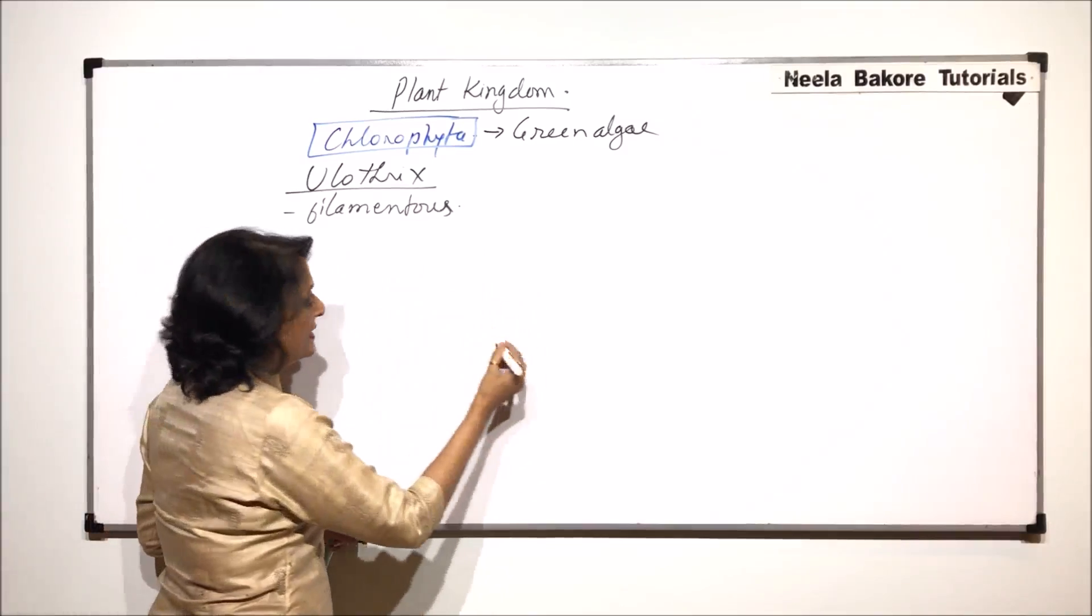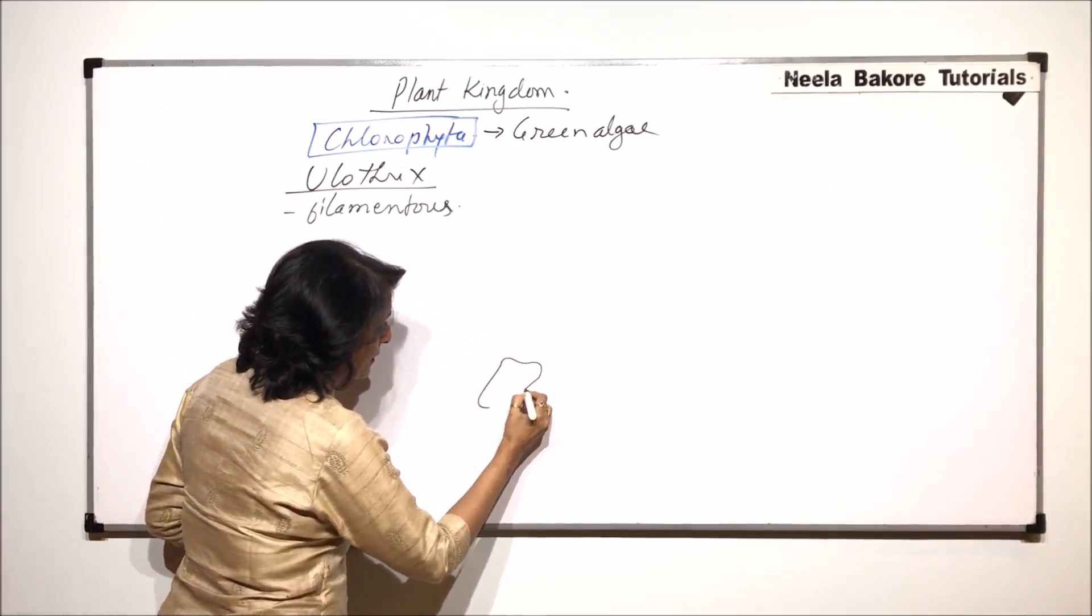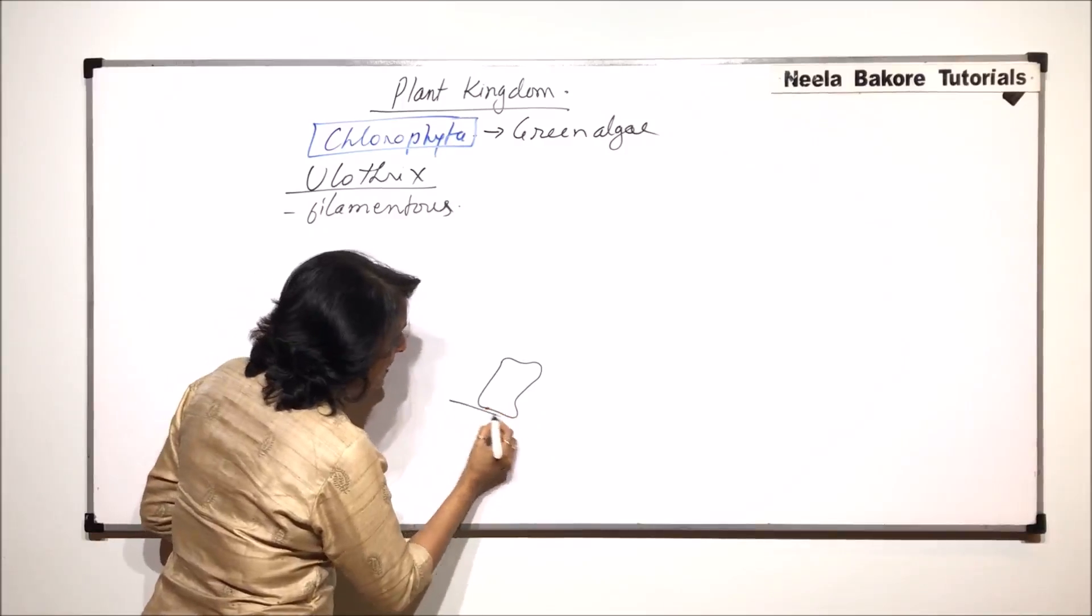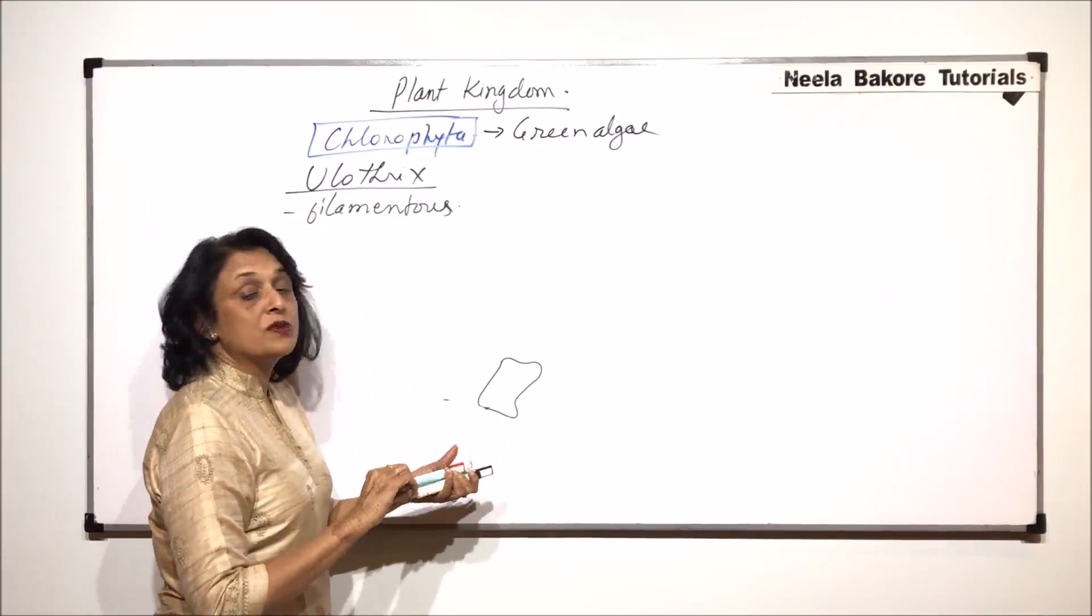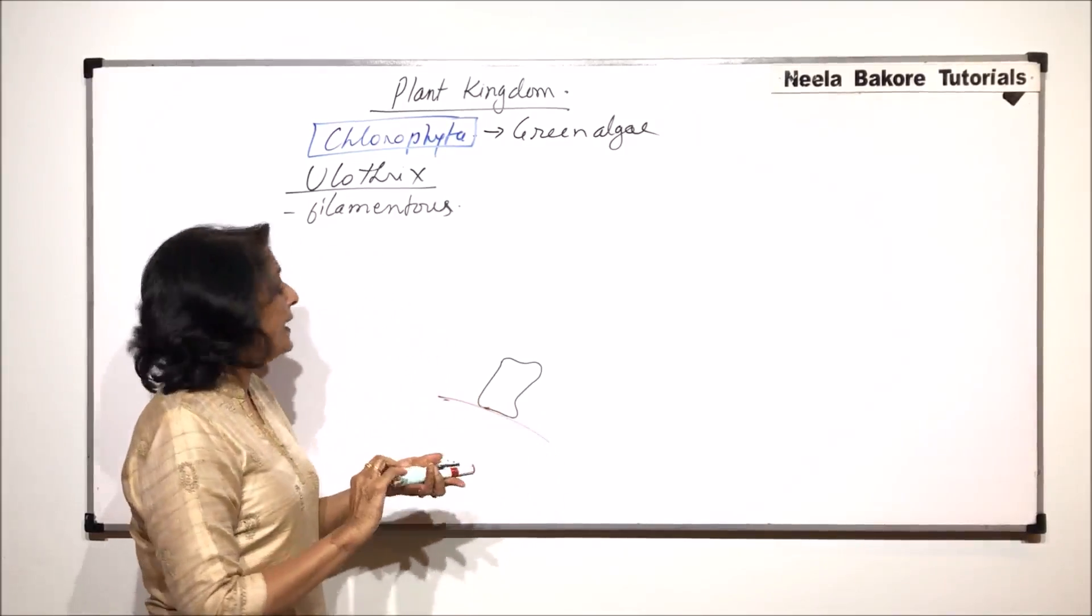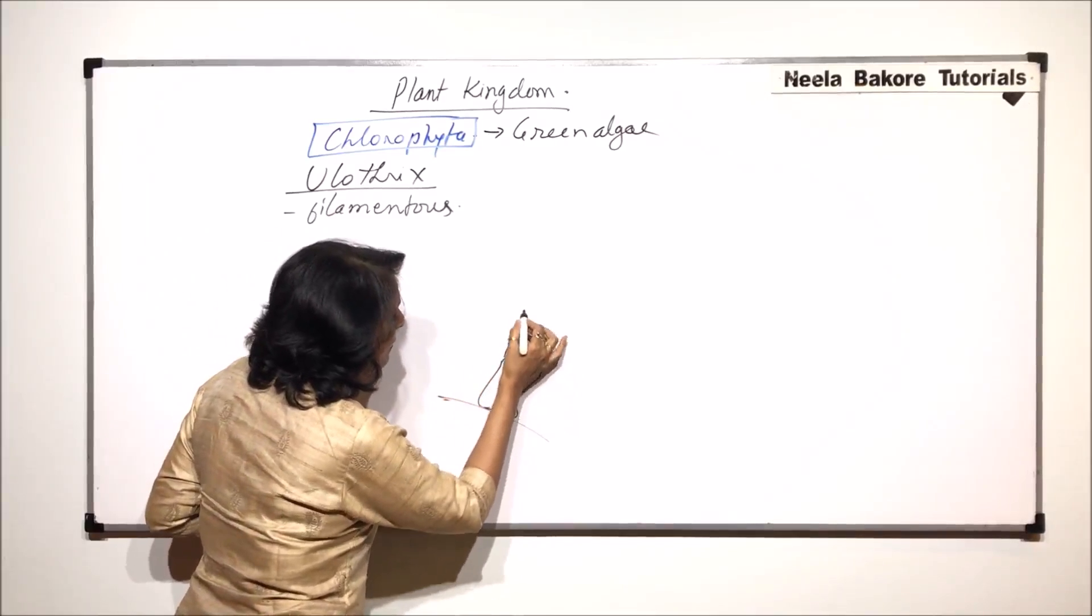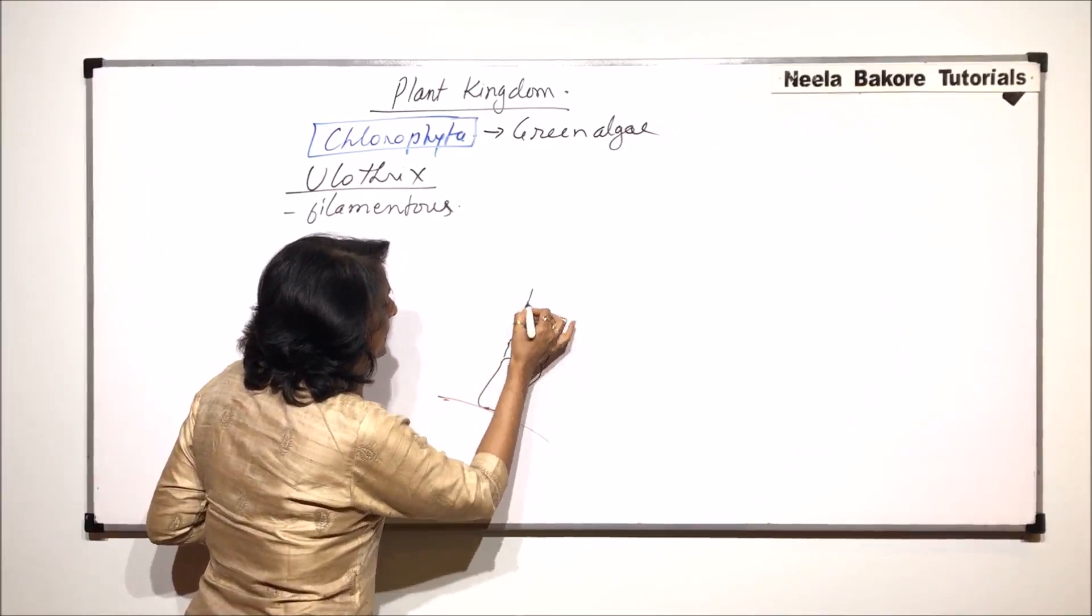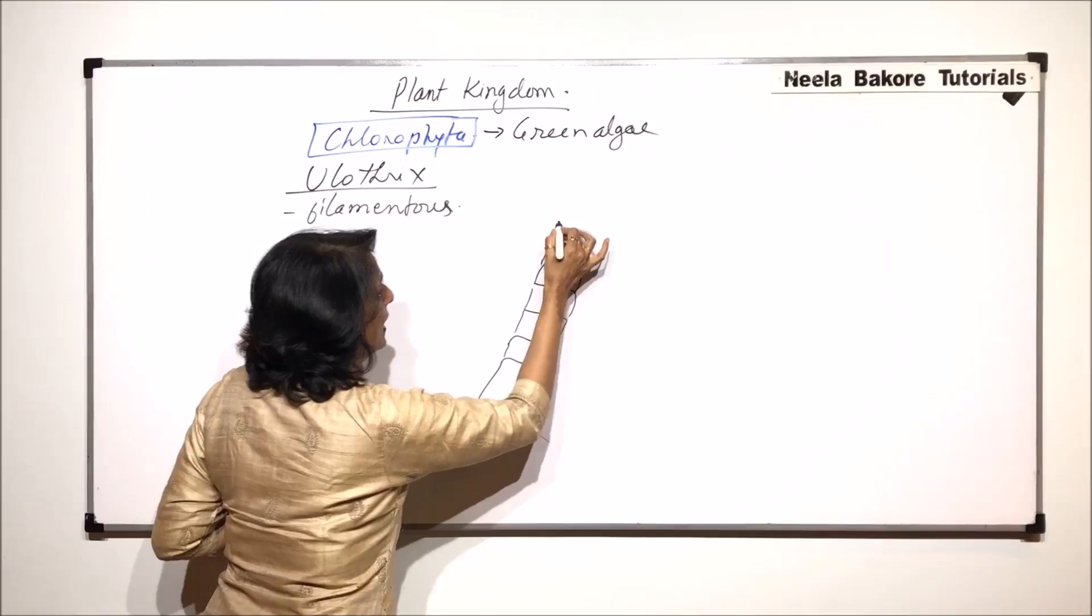As it is filamentous, the lowermost cell which is called the holdfast is the cell which is attached to a substratum. It could be a rock or a structure like that and other cells are one over the other and this is how the entire filament is formed.